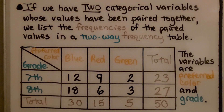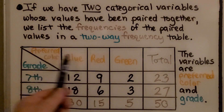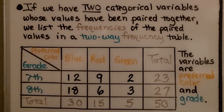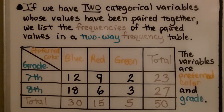So preferred shirt color is one categorical variable, and the grade — seventh or eighth — is another categorical variable. If we have two categorical variables whose values have been paired together, we list the frequencies of the paired values in a two-way frequency table.